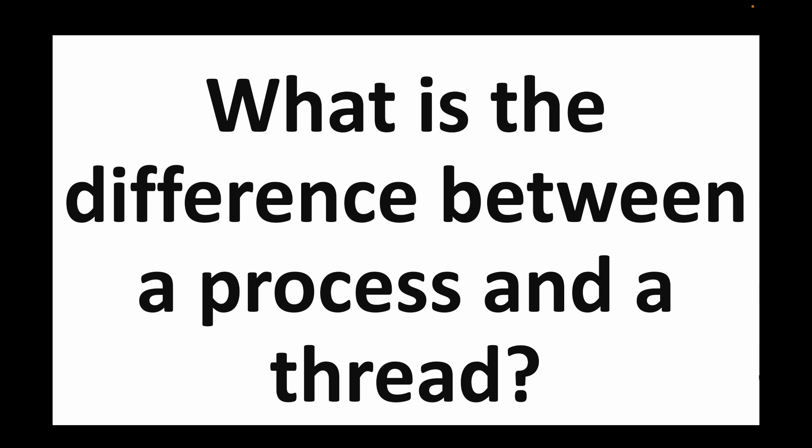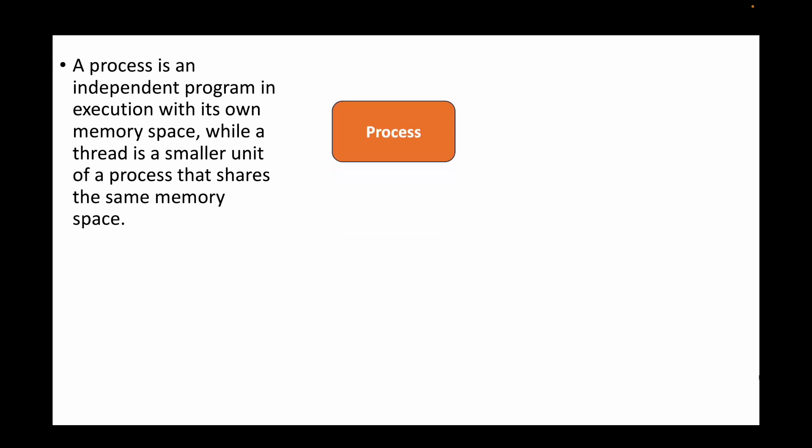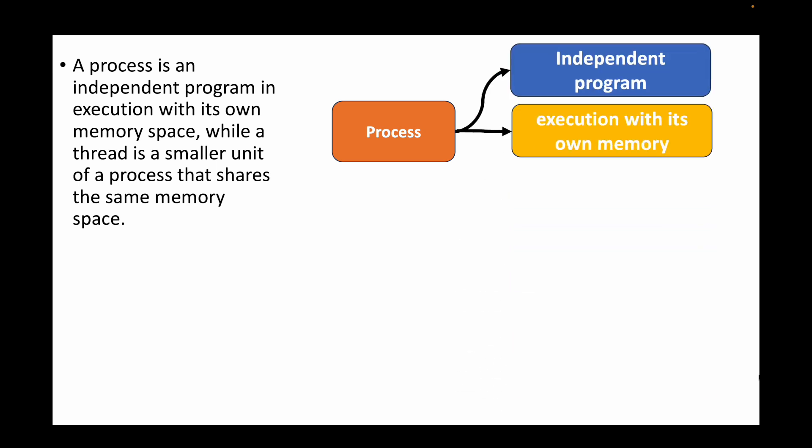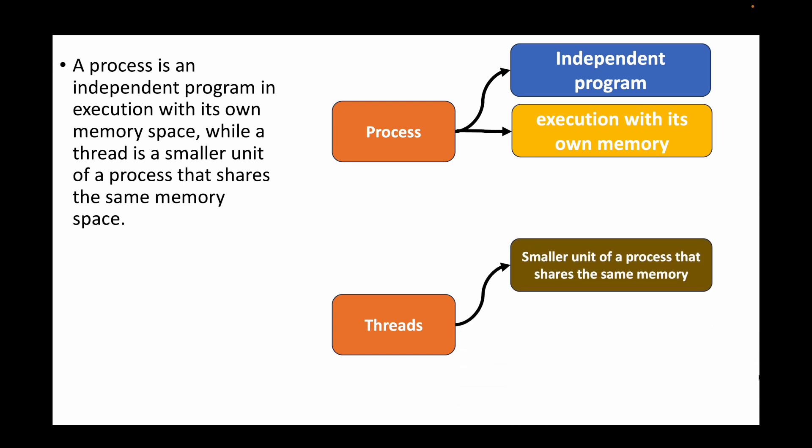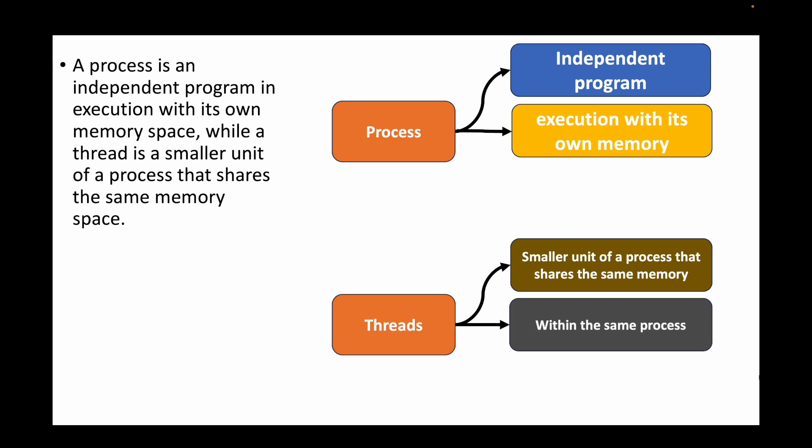The first question is: what is the difference between a process and a thread? A process is simply an independent program running in the Linux operating system and it has its own memory space for execution. A thread, on the other hand, is a smaller unit within a process and it shares the same memory space. So if you have a Java process it will have its own memory, and an Apache process will have its own memory.